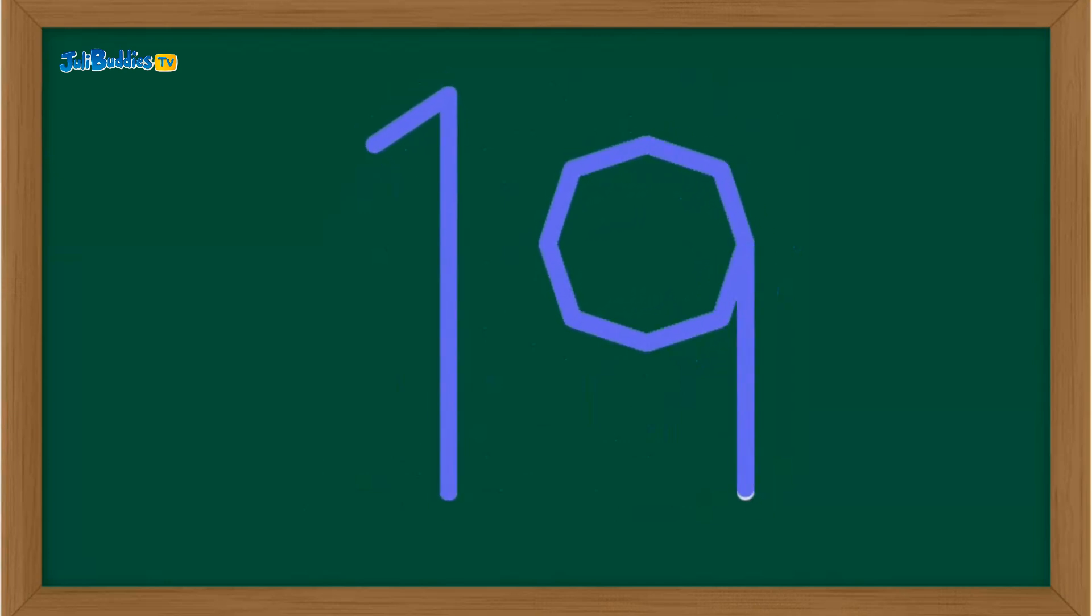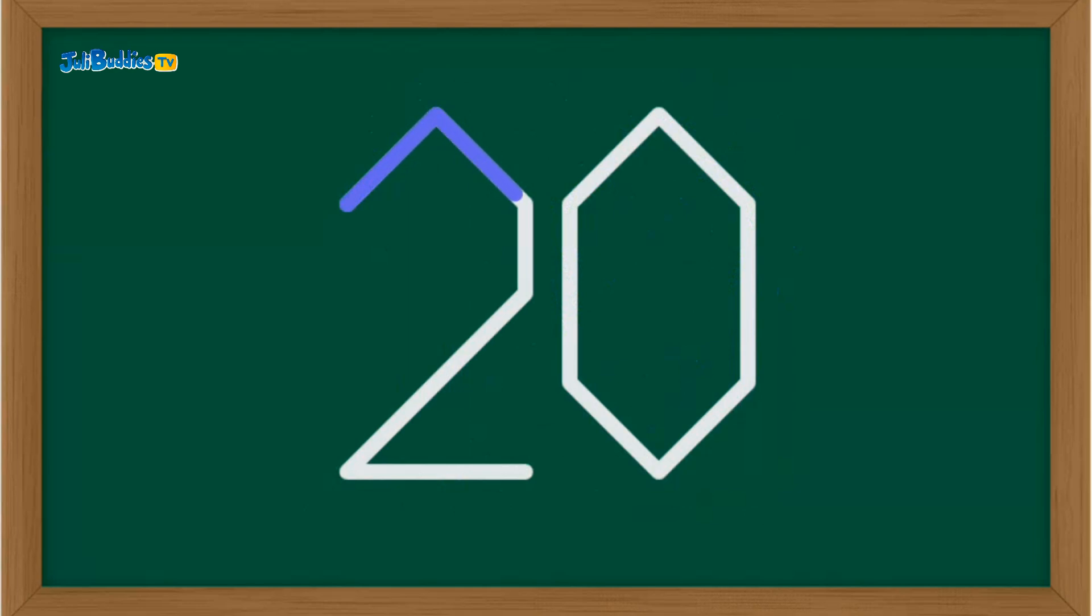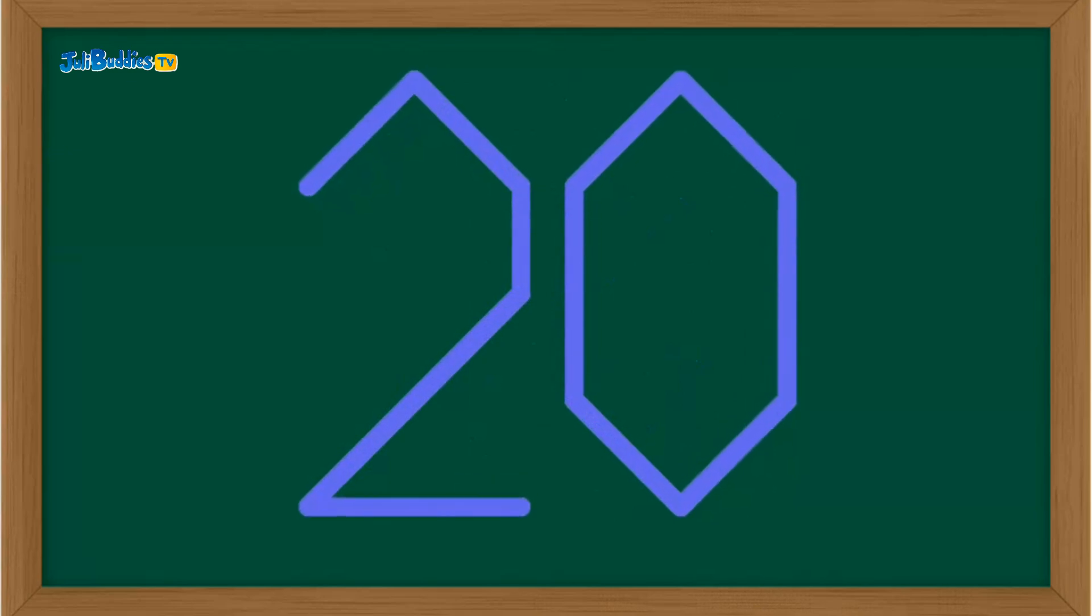And finally, number twenty. That's a two and a zero. Curve, slant, and a cross for the two. Then a big oval for the zero. You did it. You wrote all the way to twenty. High five!